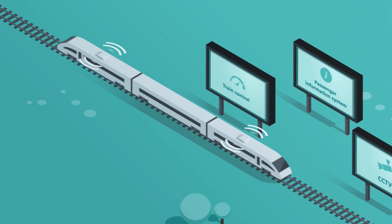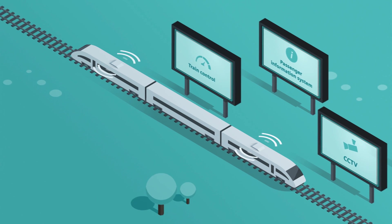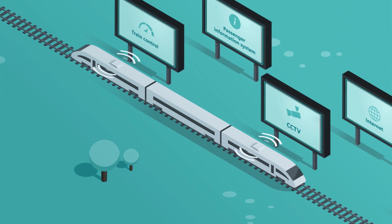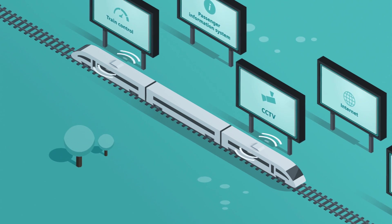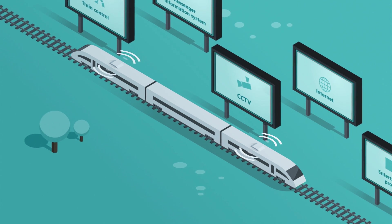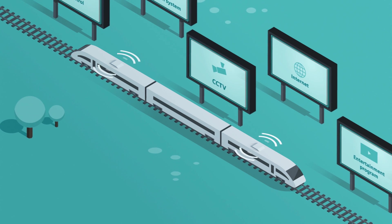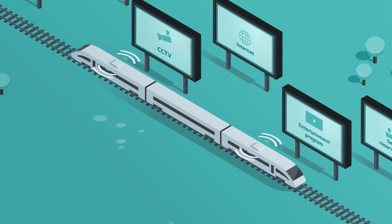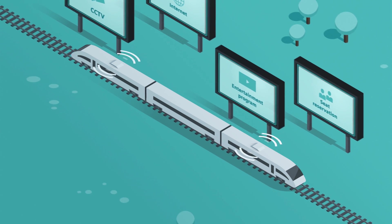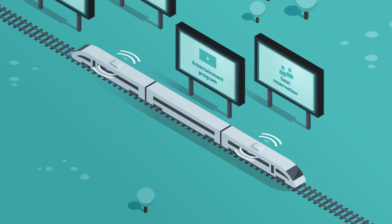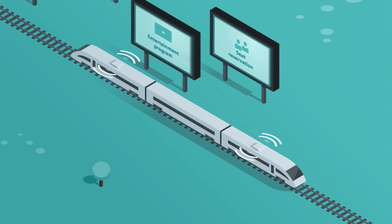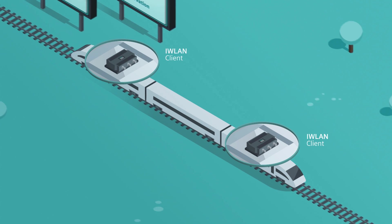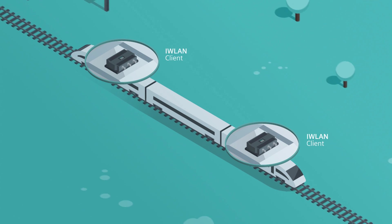Let's have a closer look at this example with a train. Data is transferred to and from the train while it is moving. For this task, the train has two industrial wireless LAN clients on board.